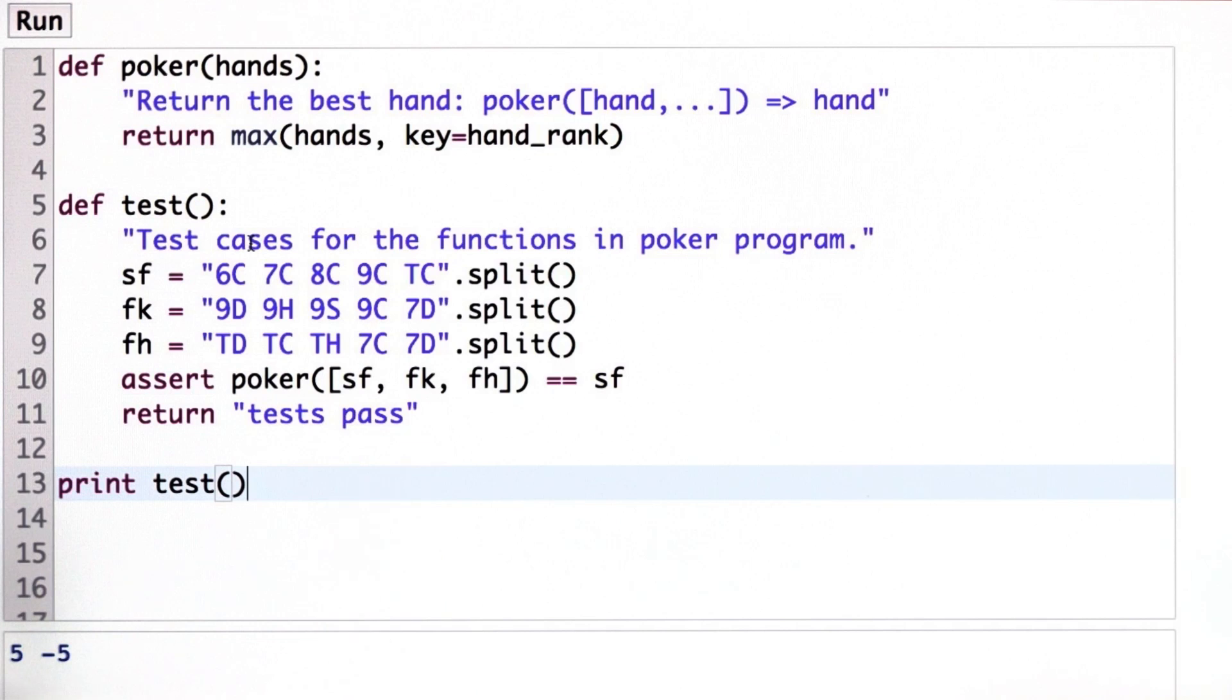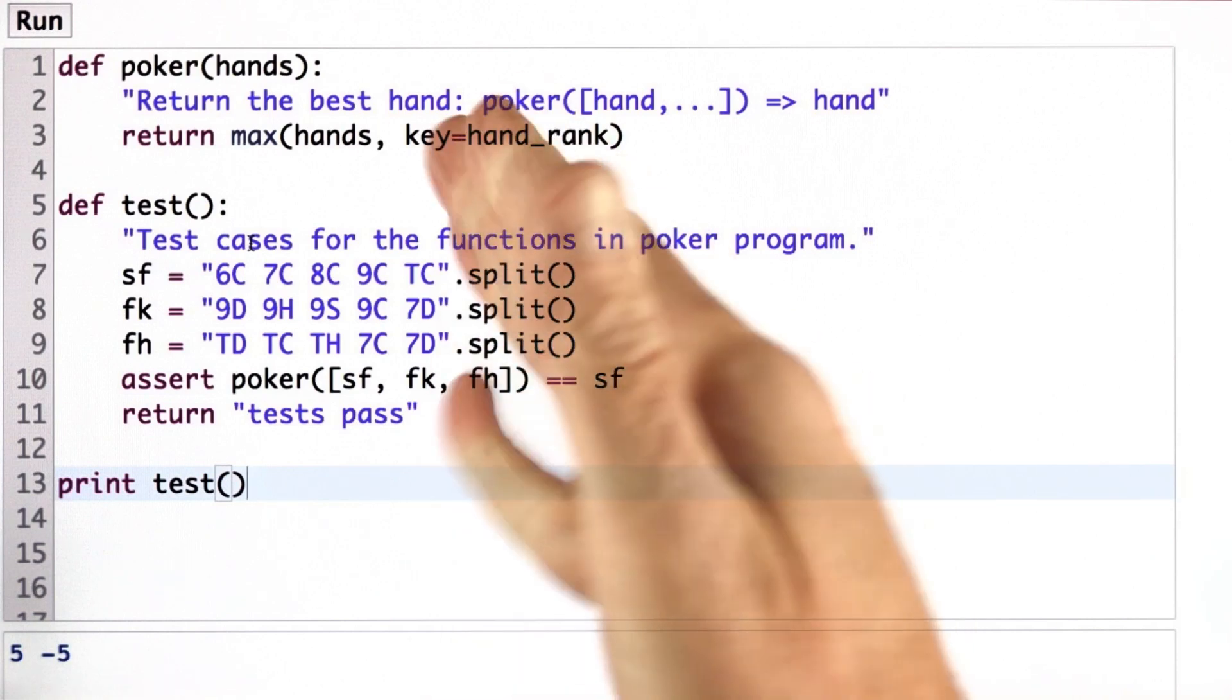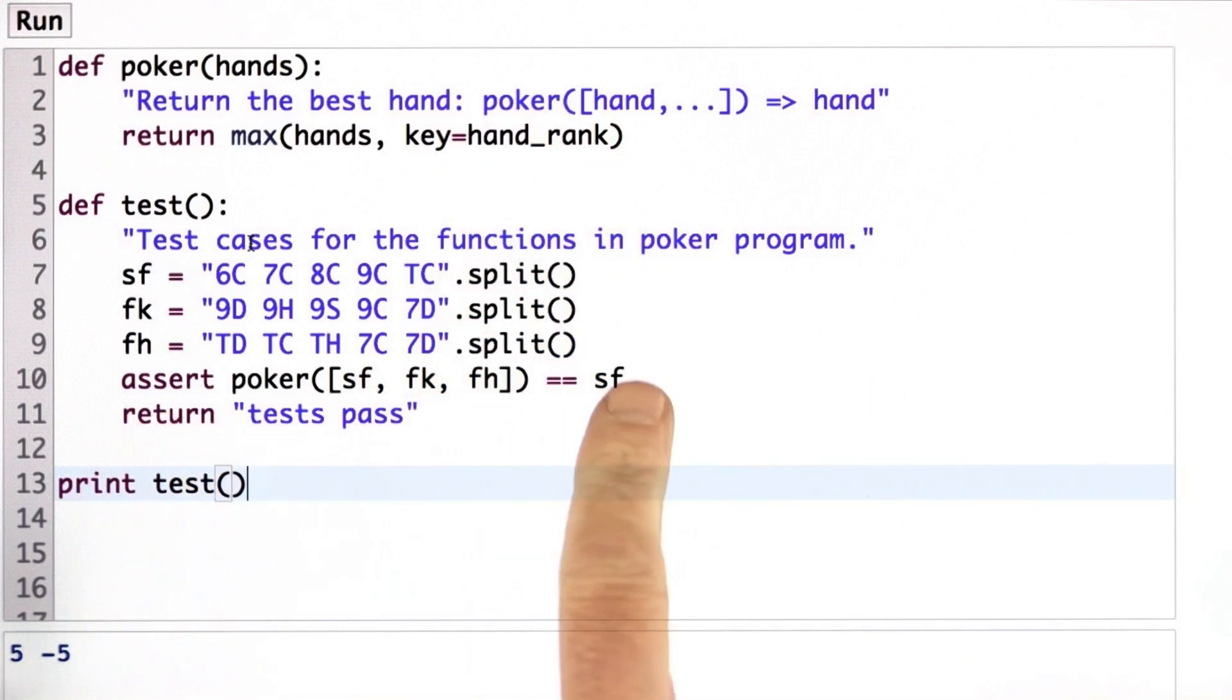So an assert statement in Python, if you haven't seen that before, says I'm asserting that the following thing must be true. And if it's not true, then the program will stop and print an error message. If it is true, it'll just move on. And if the tests pass, here I have only one test, then we'll return tests pass and print that.